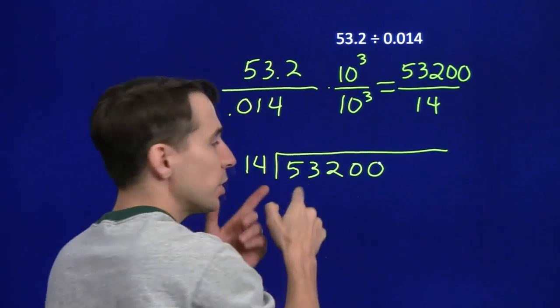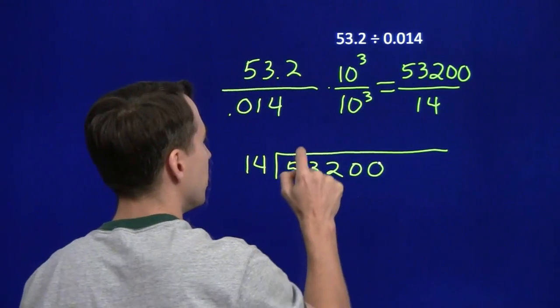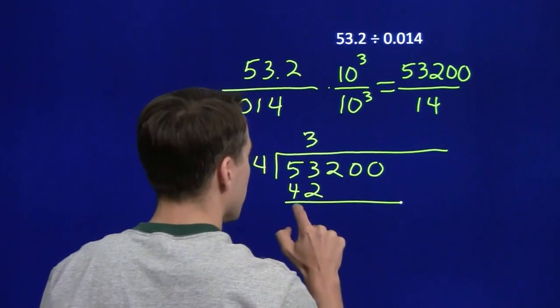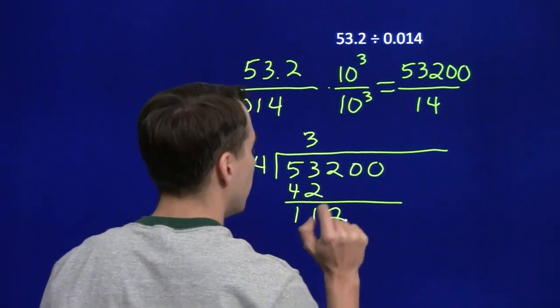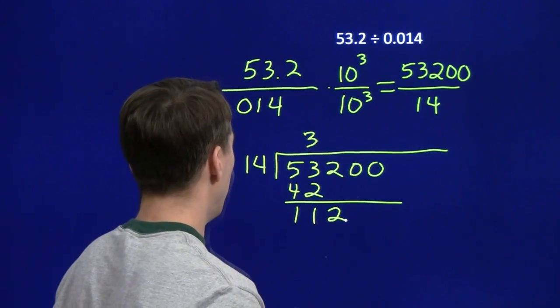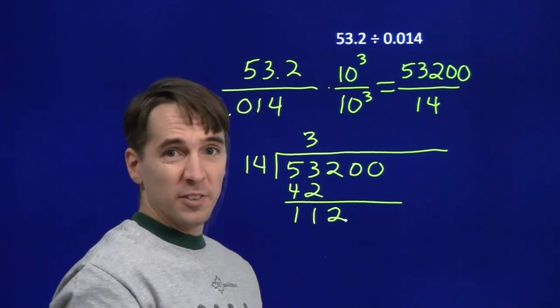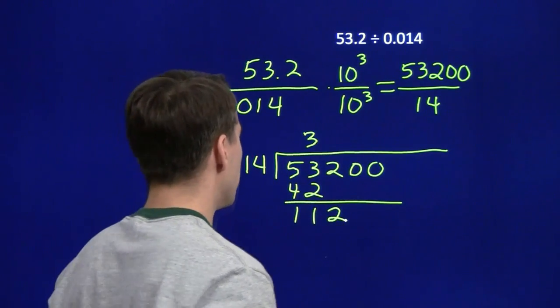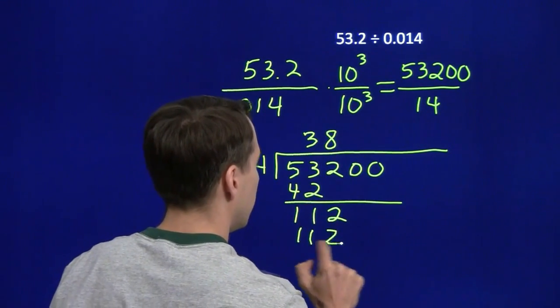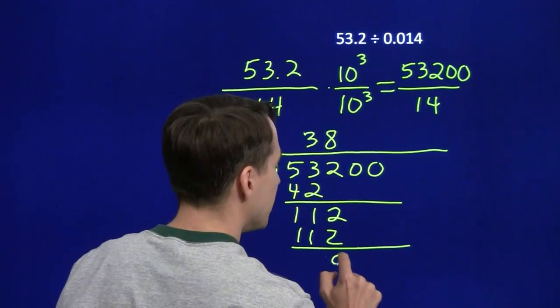53,200, divide 14 into 53. 14 goes into 53, let's see, 3 times, leaves us 11 left over. And let's see, 14 into 112, well, 14 times 4 is 56, double that is 112, so this must be 14 times 8. And again, we need to remember these zeros out here.